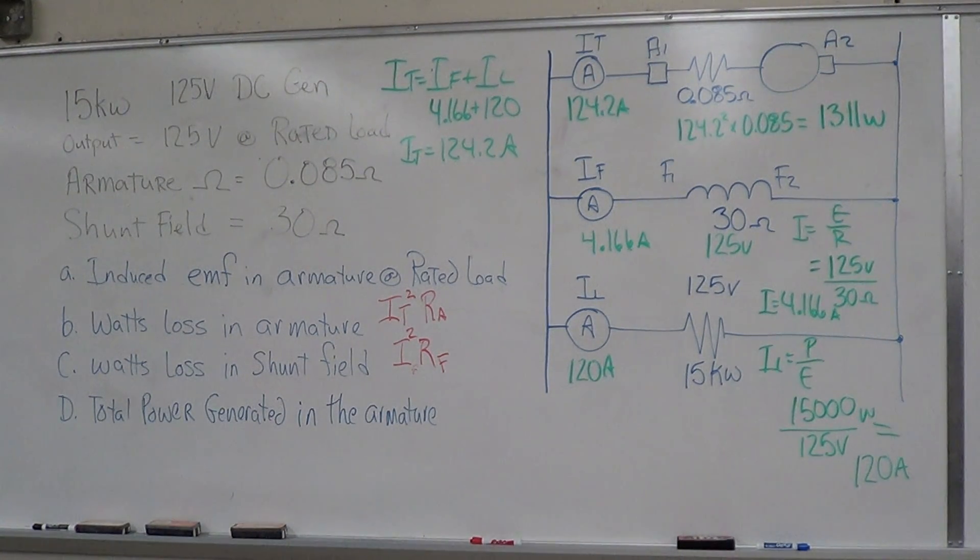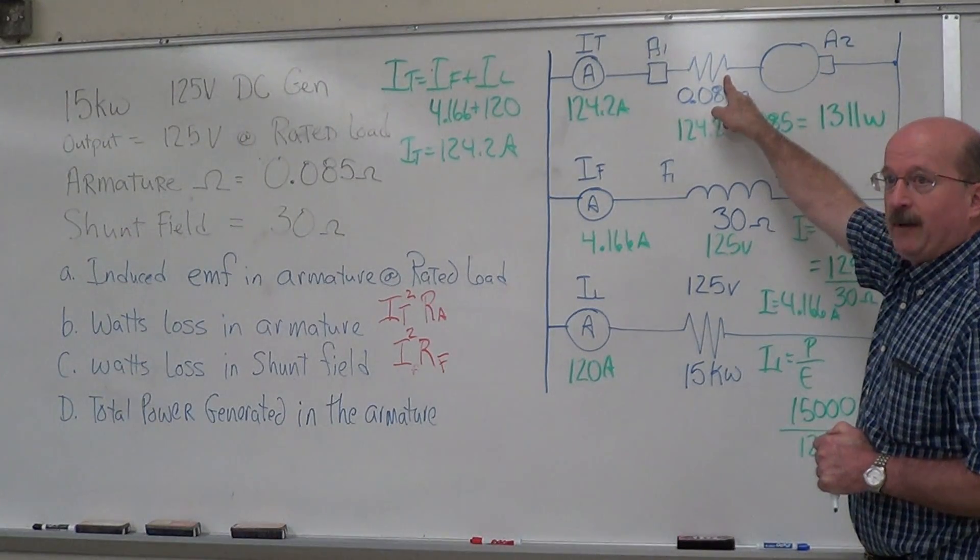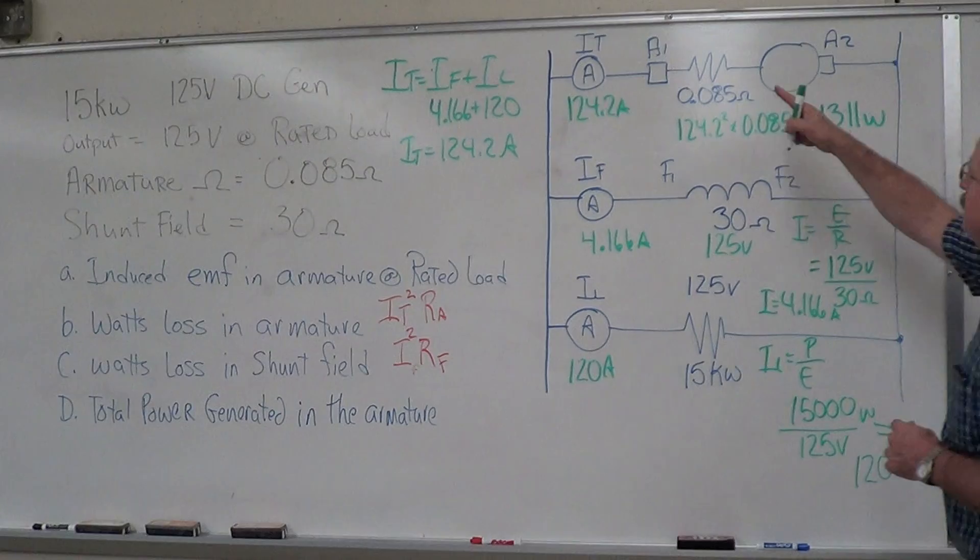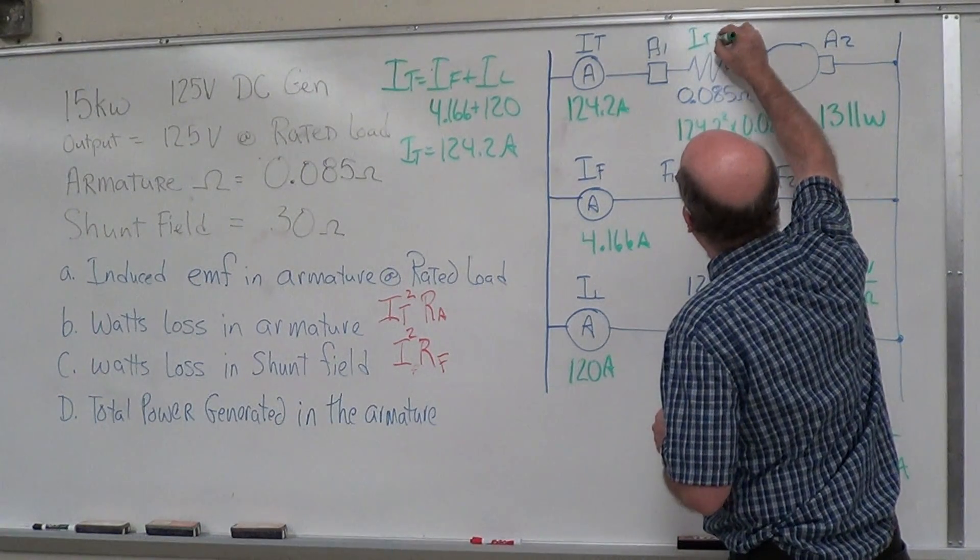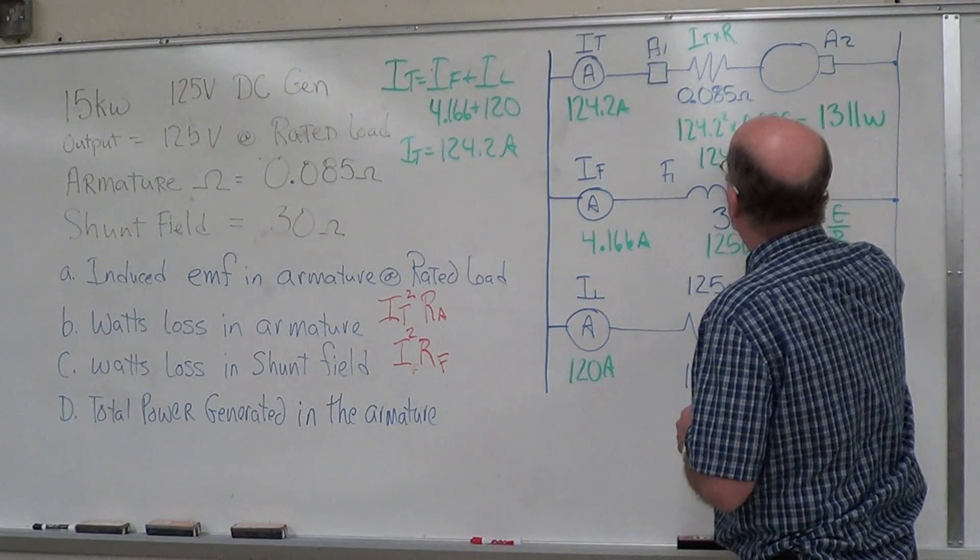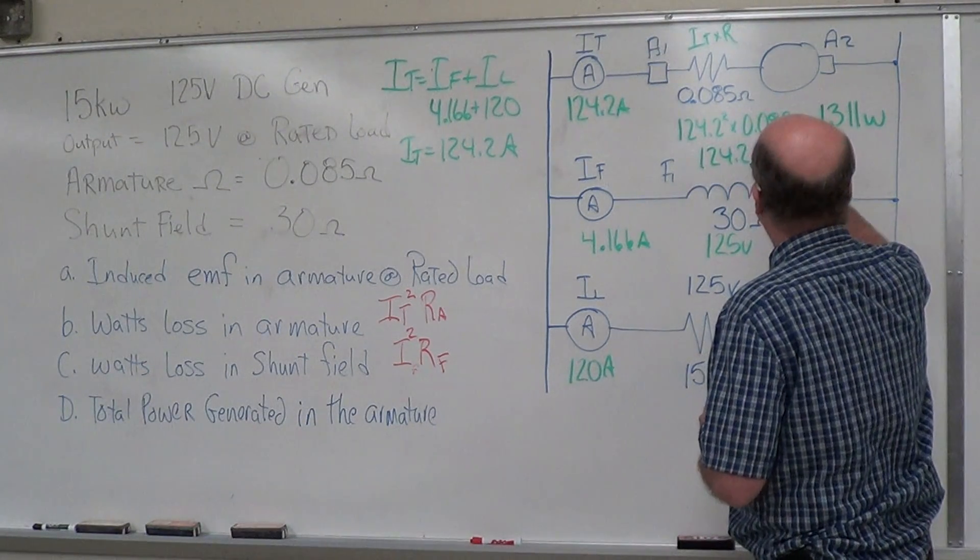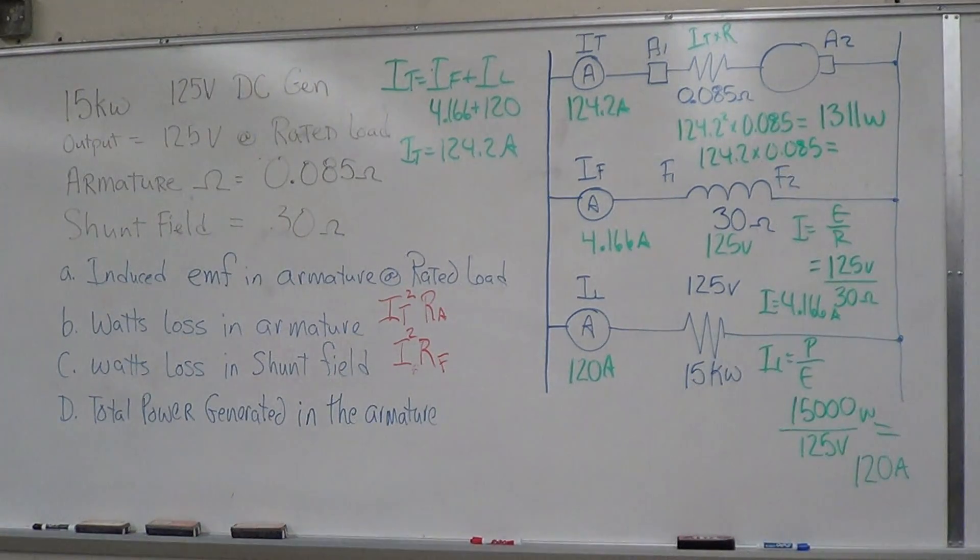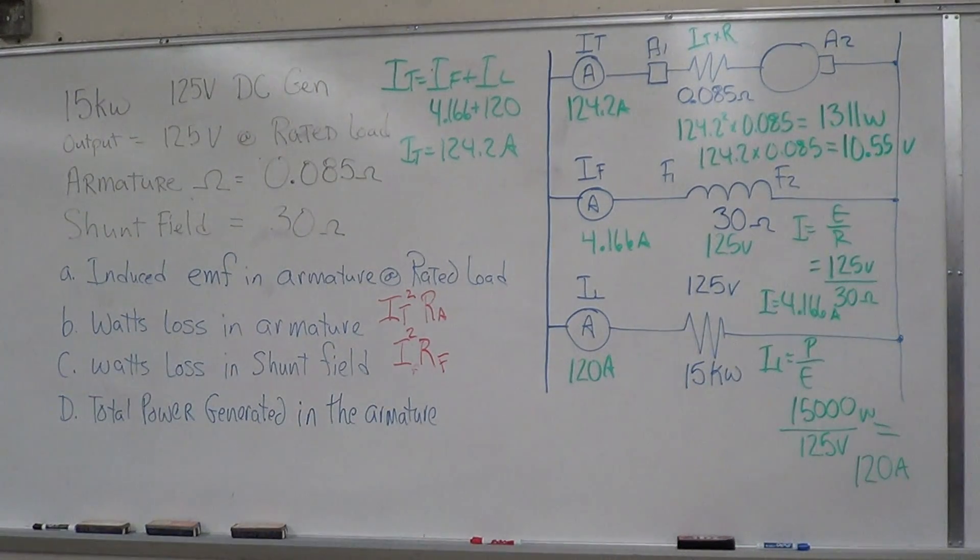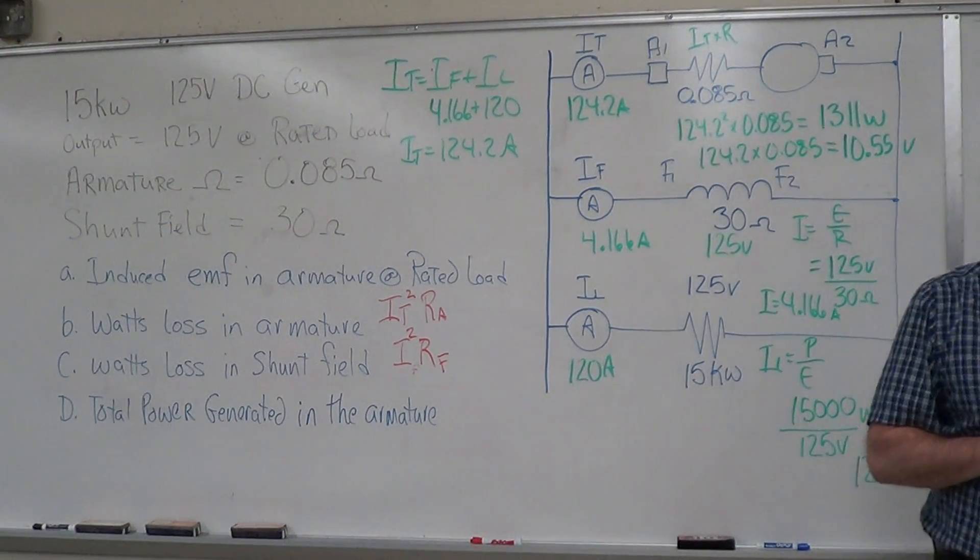Now we need some voltage. We need to know what that voltage drop is because we need to know what voltage is generated inside the armature. This voltage here is IT times R. You've got 124.2 times 0.085, which gives us 10.55 volts. That's our voltage drop across the internal resistance of the generator.